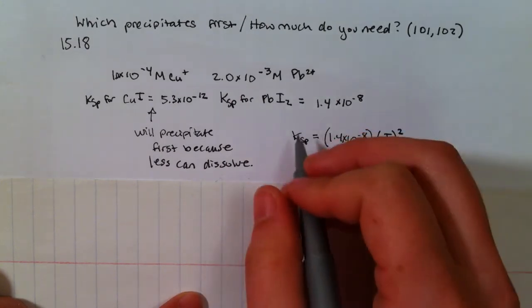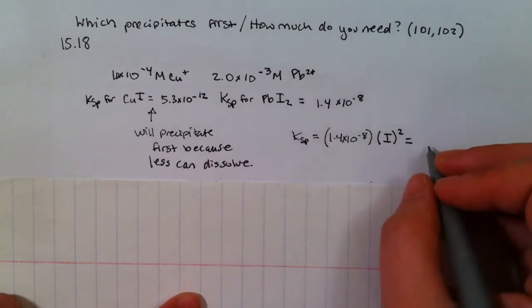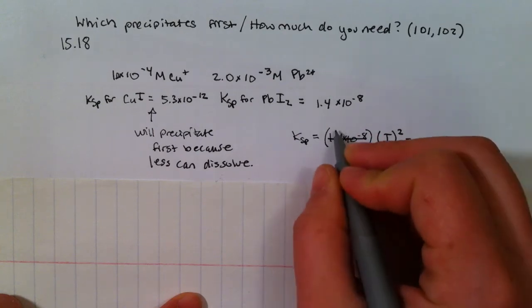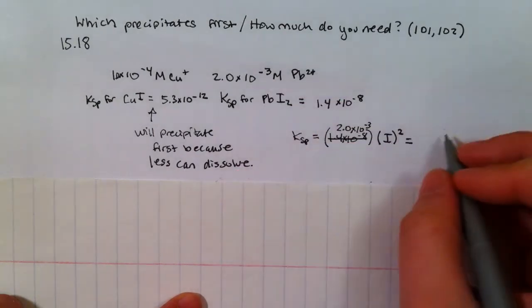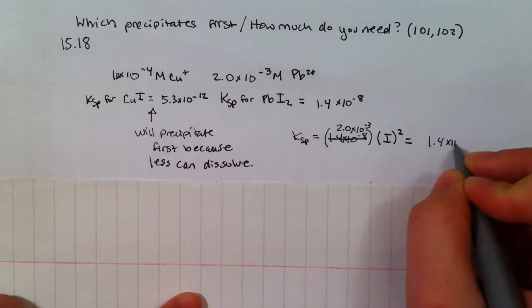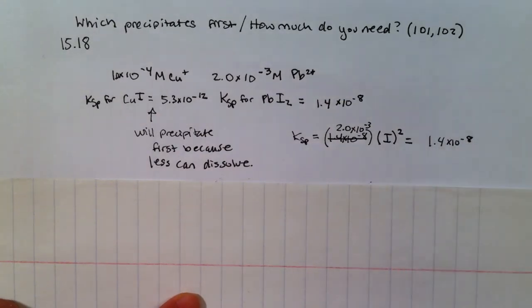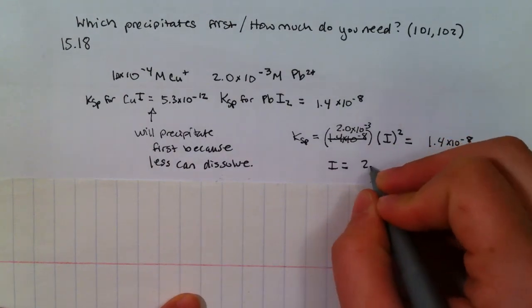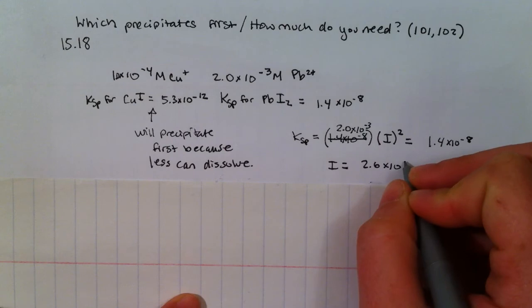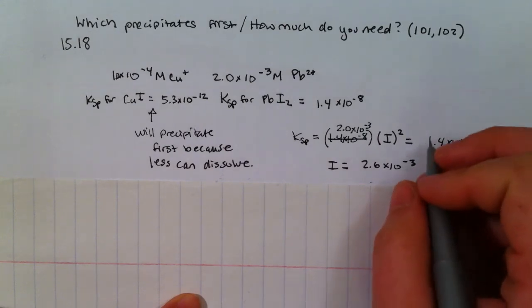And that's equal to the, oops sorry, this should be 2.0 times 10 to the negative 3rd, that number. And that's equal to 1.4 times 10 to the negative 8th. When you do this and solve for I-, you're going to see that I- equals 2.6 times 10 to the negative 3rd molar.